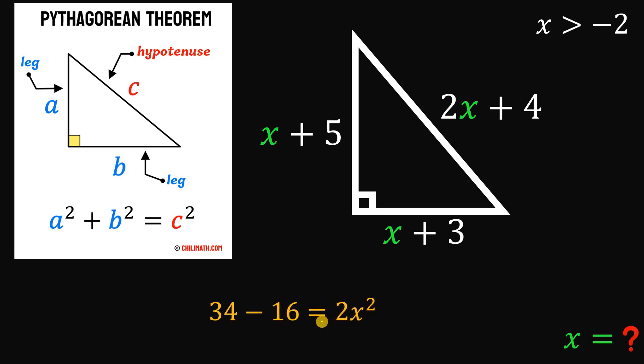So we have 34 equals 2x squared plus 16. Subtract 16 on both sides. 34 minus 16. This will give us 18. Divide both sides by 2. This is just 9.